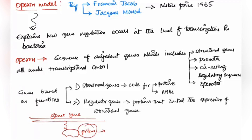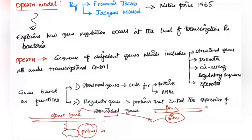Structural genes give protein products used in catabolic or anabolic pathways or other metabolism. Regulatory genes give protein products that are used to regulate the expression of structural genes — they are involved in controlling which structural genes get expressed. That is why they are called regulatory genes.